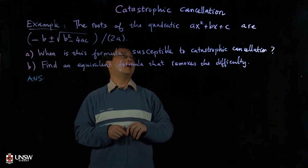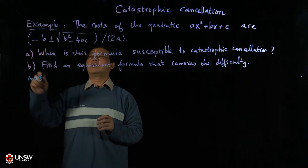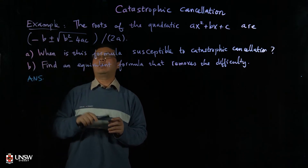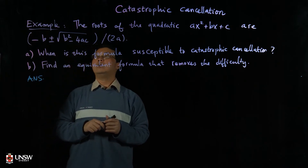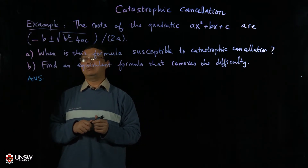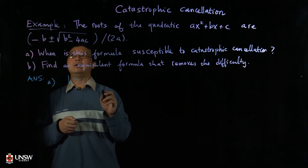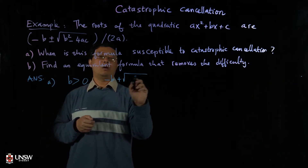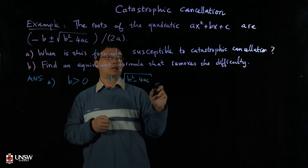An example: suppose you try to solve a quadratic ax² + bx + c. You will have the formula for the roots: r = (−b ± √(b² − 4ac)) / 2a. When b is positive, the term −b + √(b² − 4ac) can have catastrophic cancellation.